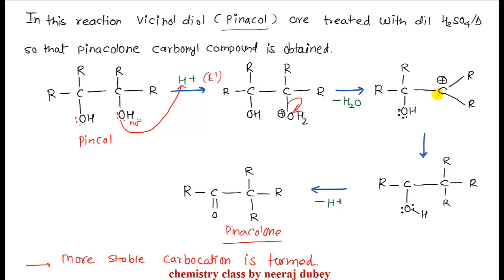This carbocation is more stable — a more stable carbocation is formed. If the alkyl group migrates here, because if a more stable carbocation is formed, this is the alpha effect. The next step is a pair of electron shift — oxygen will release positive charge, and finally ketone (pinacolone) will be obtained.